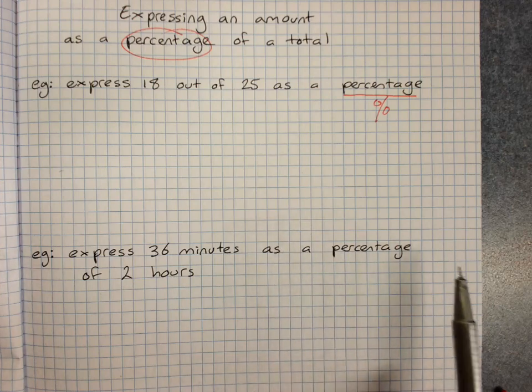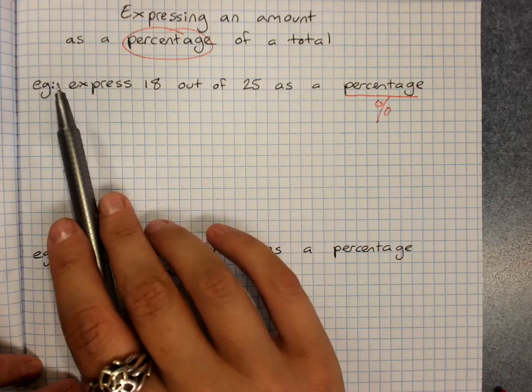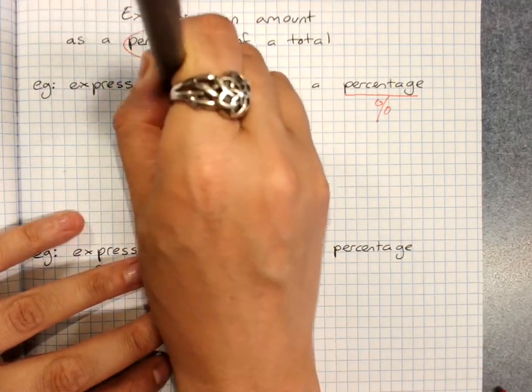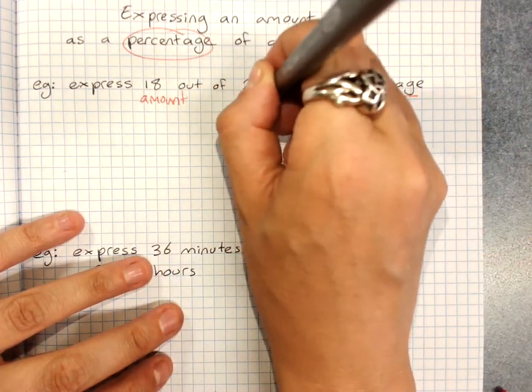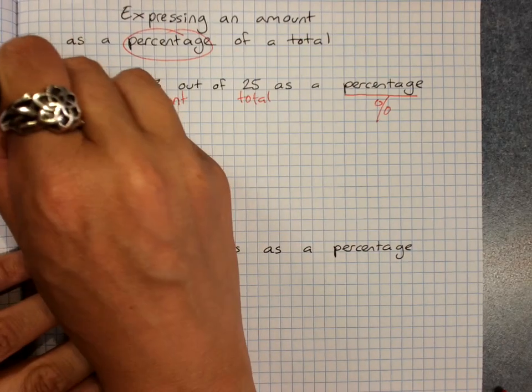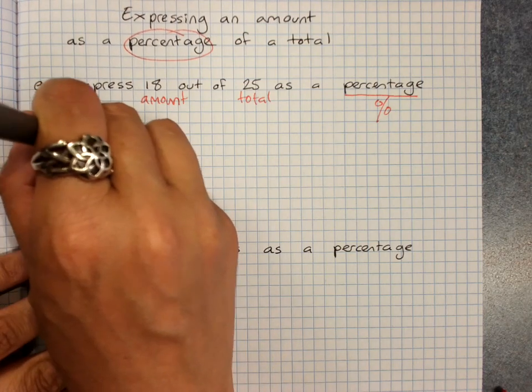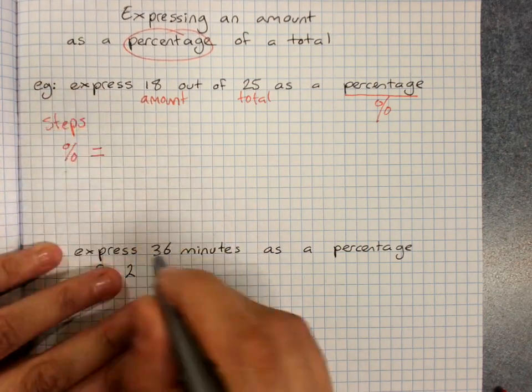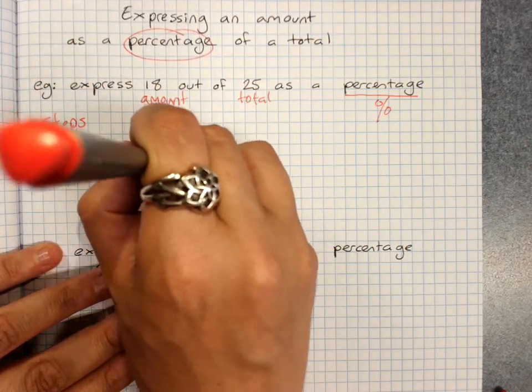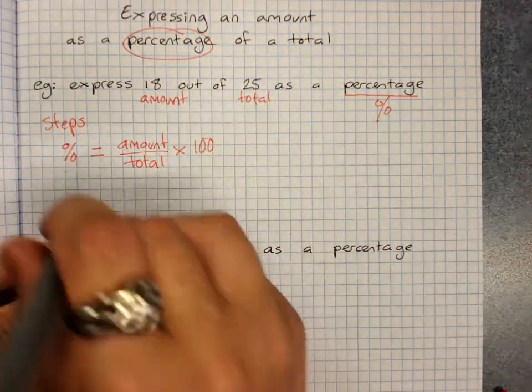When they say that they want me to write an amount out of a total as a percentage, then what we have to do is our percentage will equal the amount out of the total times 100. So this is our rule for how to find out what percentage something is.